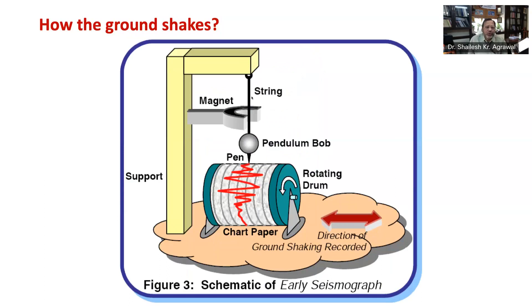Now let's move to how we measure earthquakes. The instrument for measuring earthquake shaking is called a seismograph. The seismograph has three components: the sensor, the recorder, and the timer. This figure shows one of the earliest seismographs recording an earthquake. You can see a pen attached at the tip of an oscillating pendulum. The pendulum is a mass hung by a string from a support. This pen marks on chart paper held on a drum rotating at constant speed. The pendulum mass, along with the string, magnet, and support, constitute the sensor. The drum, pen, and chart constitute the recorder, and the motor which rotates the drum at constant speed forms the timer. This is one of the earliest seismographs.